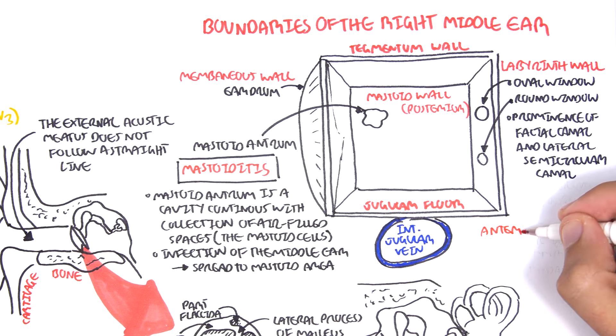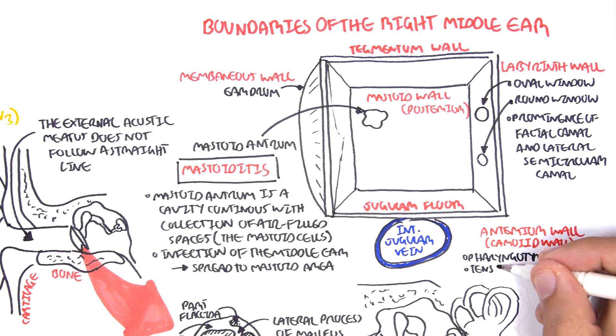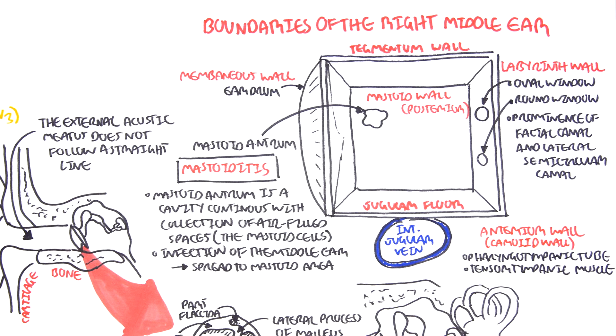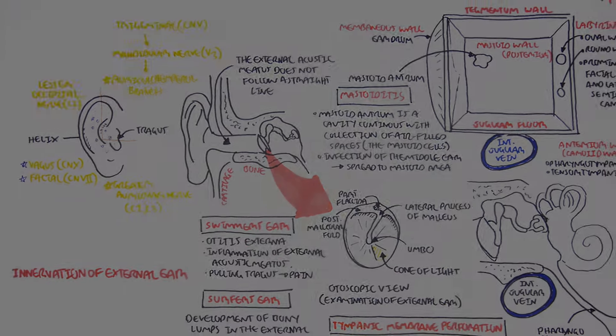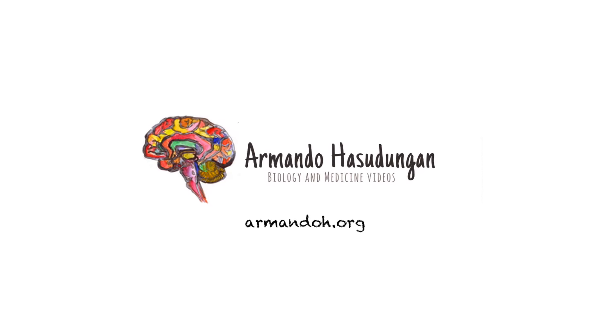The anterior wall of the middle ear is known as the carotid wall. Here we can find the pharyngotympanic tube and tensor tympanic muscle run its course. So that was it on the middle ear and the external ear. If you haven't watched the other video on the anatomy of the ear overview, please watch that. Thank you.